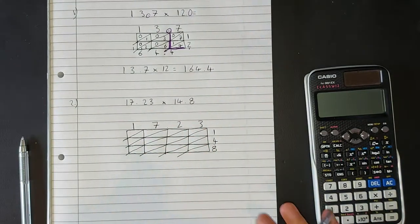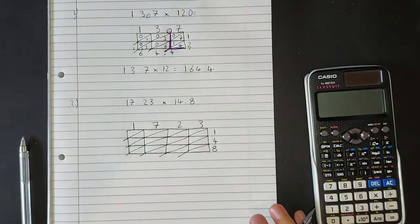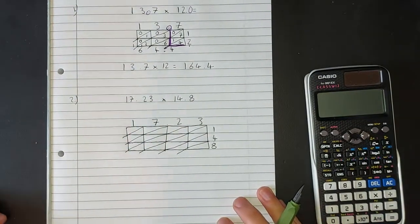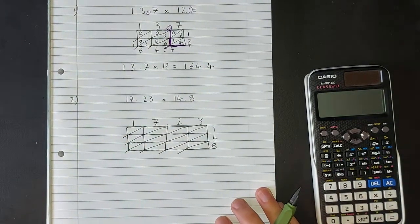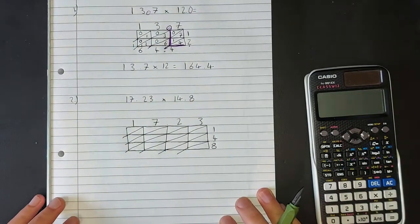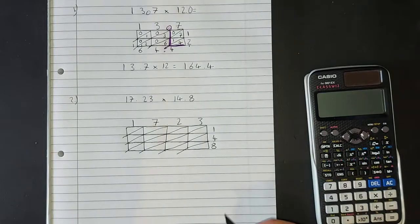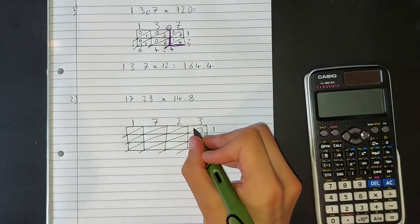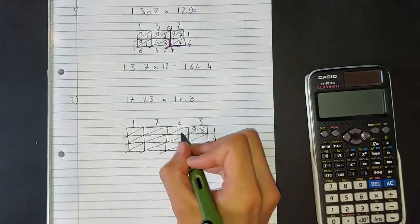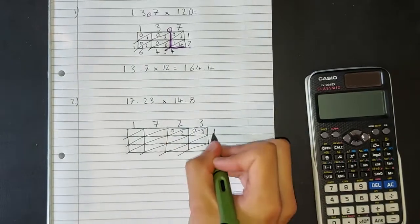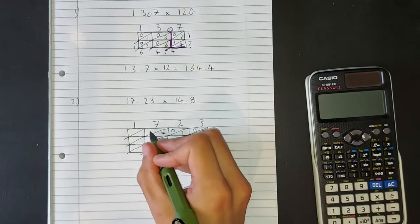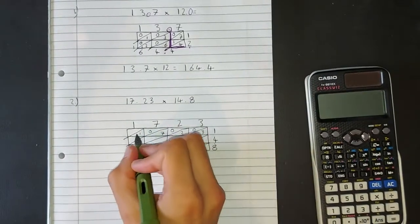So this may look horrible, but this will save you lots of time compared to using grid method and writing out all them zeros, or using column method and having to contain so much in your head. Right, let's work along the top row first. So you're going to do 1 multiplied by 3, which is 3, 1 multiplied by 2, which is 2, 1 multiplied by 7, which is 7, and 1 multiplied by 1, which is 1.